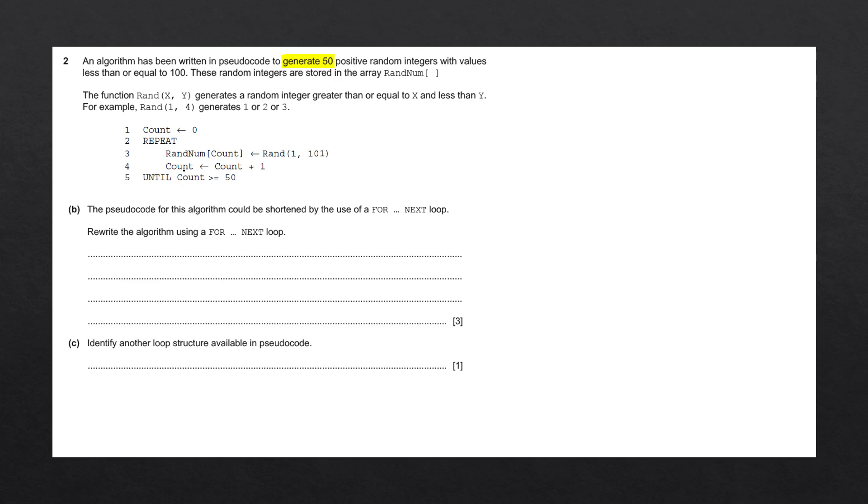A for loop does these three steps, all in a single line. Let's write those three steps out. The first is to initialize the count variable. The second is to check if this count variable is equal to the stop value. The stop value in this case is 50. And the third step is to increment the count, usually by 1.